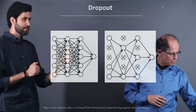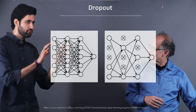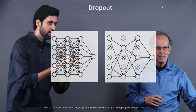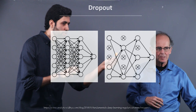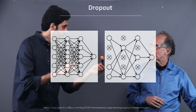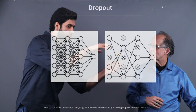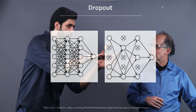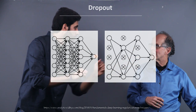Let's see this in more detail. We do that for each iteration, and this way we learn different paths to the solution. It's some sort of having different networks to learn the same problem.